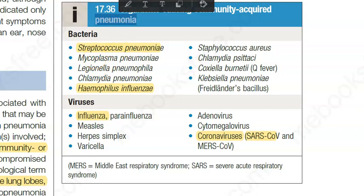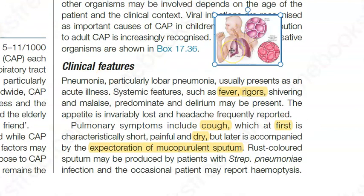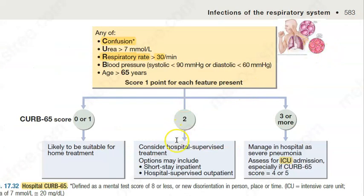So how do you define pneumonia? Pneumonia is basically an acute respiratory illness where there will be consolidation of the lobes, which can become lobar pneumonia. The clinical features are that these people will have upper respiratory tract infection, fever, rigors, cough associated with sputum, and pleuritic chest pain.